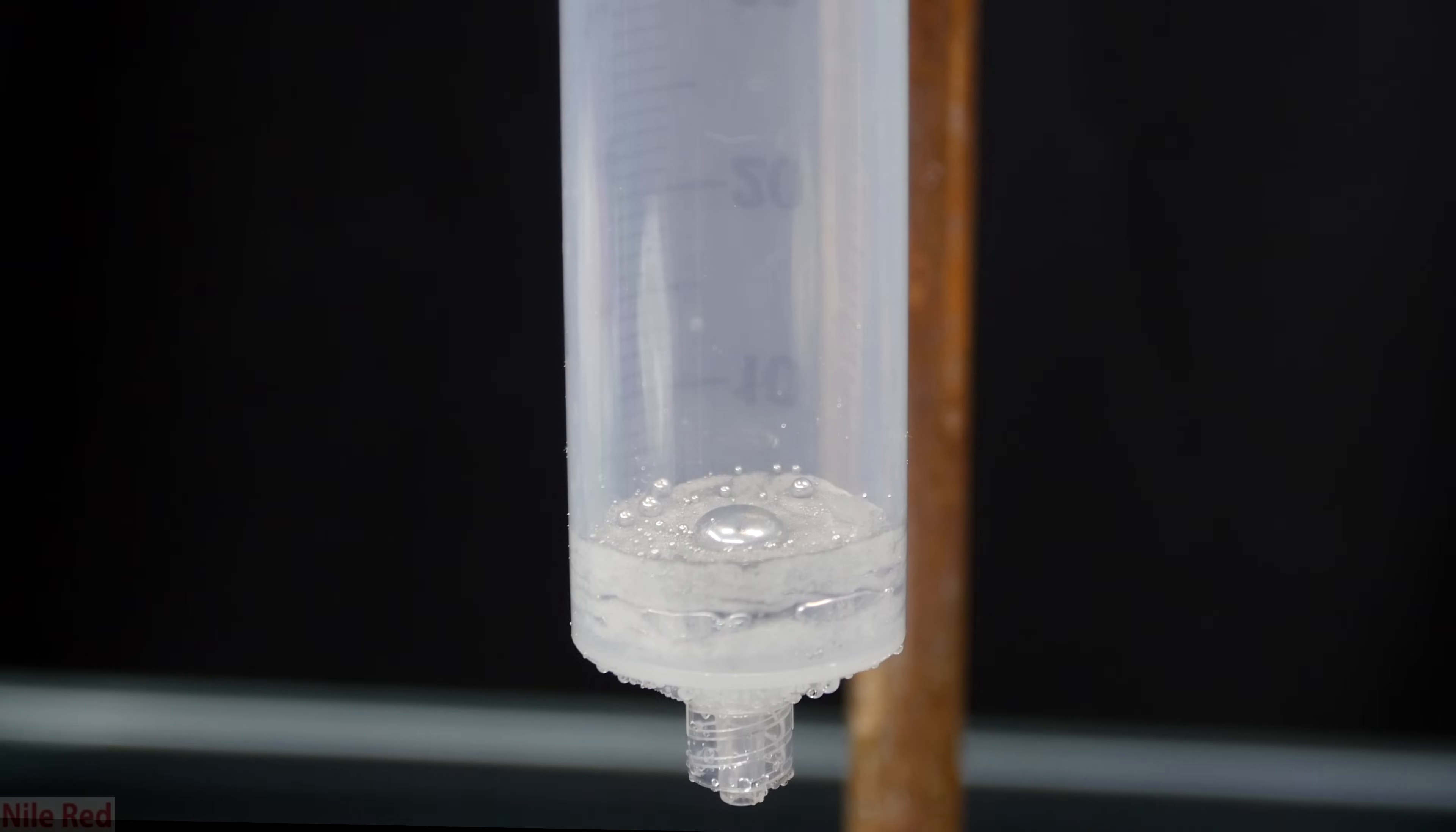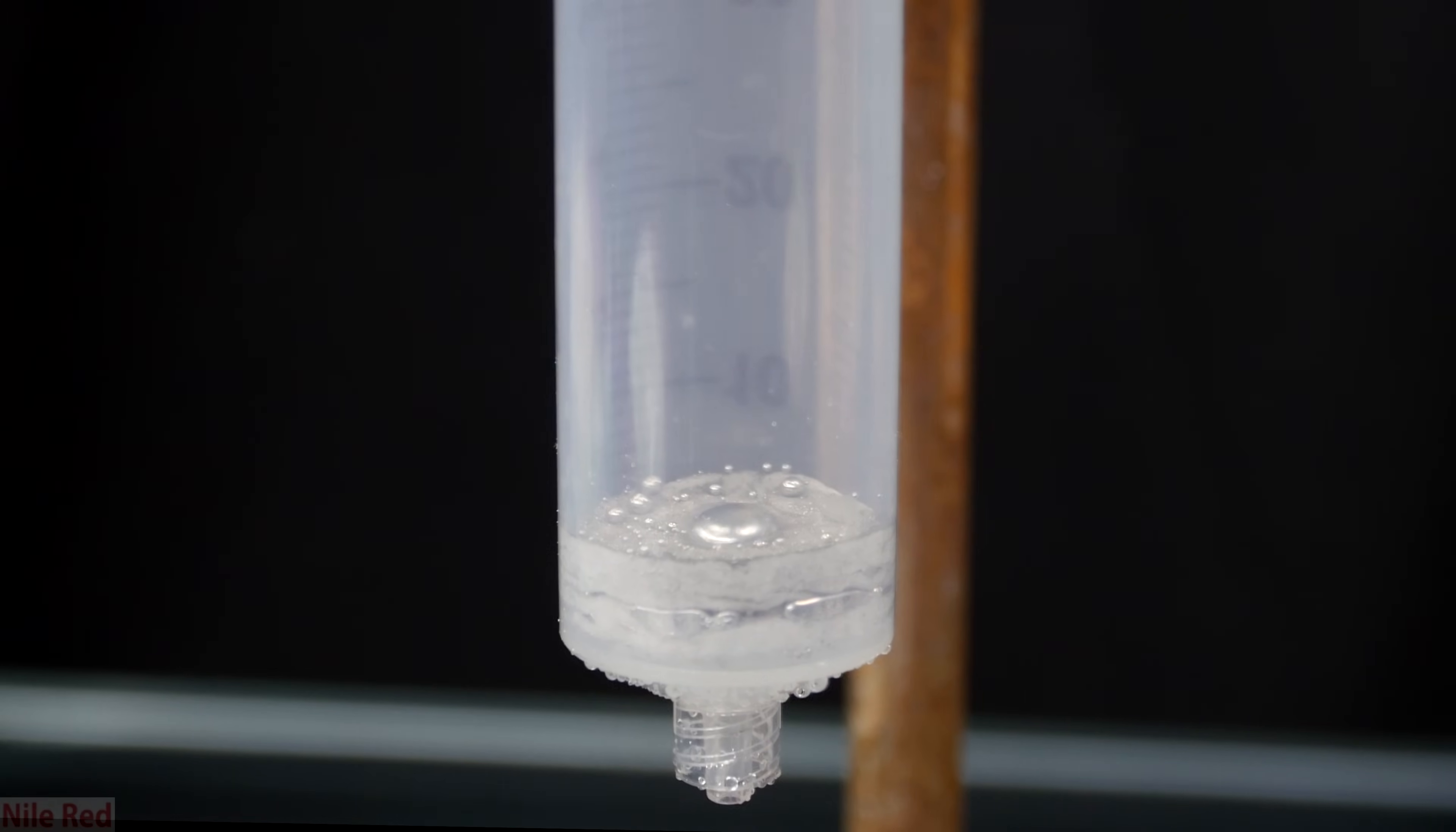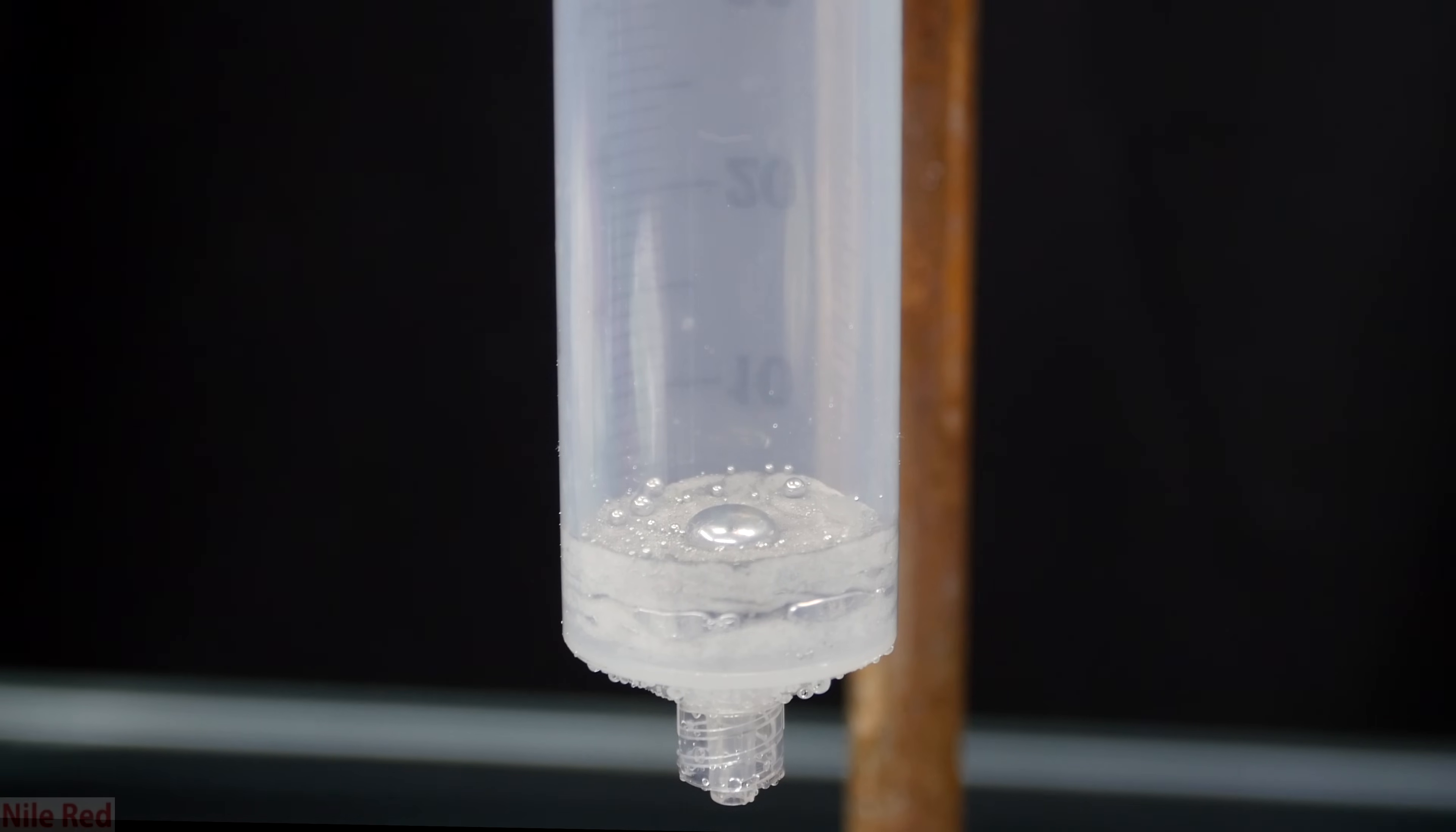In the syringe you can see that there's some mercury that doesn't make it through and it's inevitably lost. My mercury was already quite clean and didn't have a crazy amount of insoluble impurities, so you actually can't really see them on the cotton.